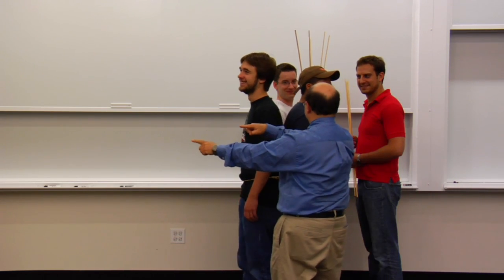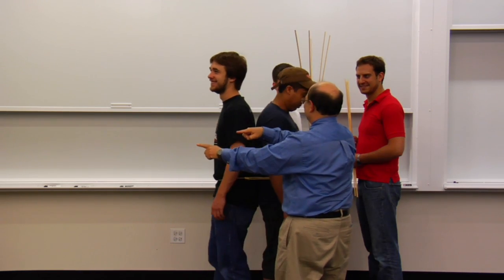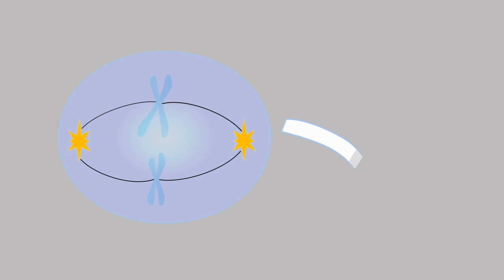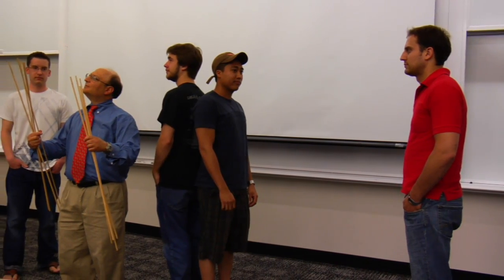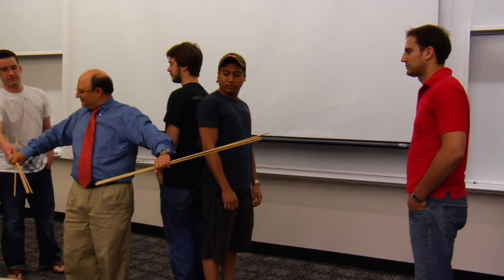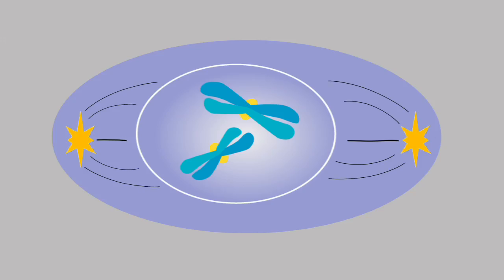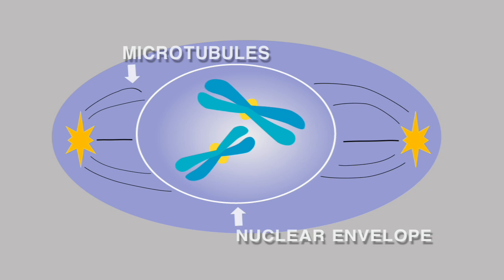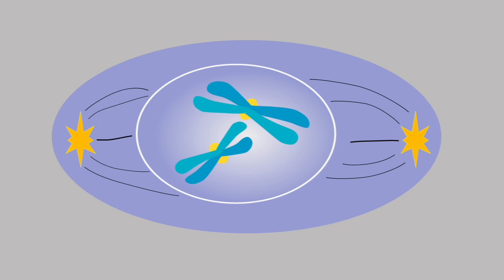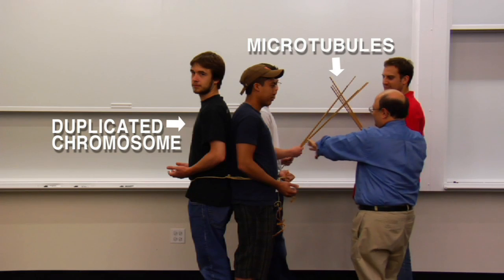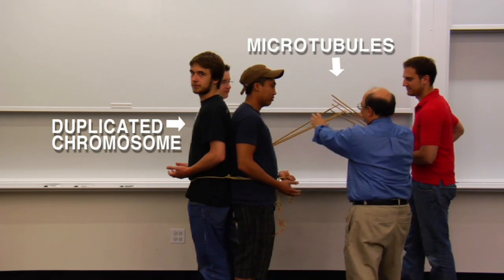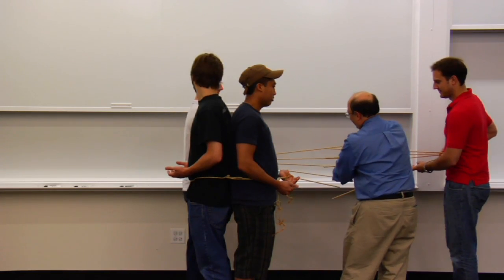So whatever they do, they have to do as a unit. So this duplicated chromosome — I then take them through the different stages of mitosis. At first we have two other students who are forming these microtubules, which I just use long wooden dowels. And these microtubules are outside the nucleus at first, the nucleus being the containment area for the chromosomes.